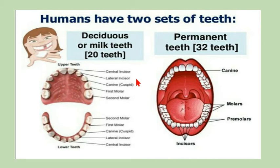A two-year-old kid starts erupting teeth from its jaws, and when the child is about seven years of age the complete set of primary teeth develops. Later on, these primary teeth start falling out and they are replaced by the secondary teeth.